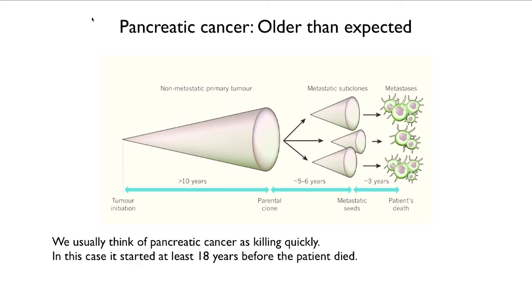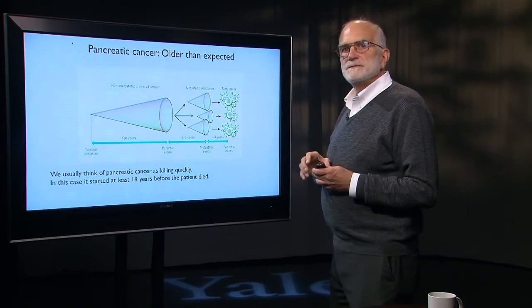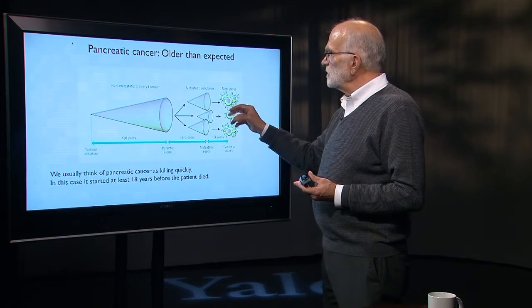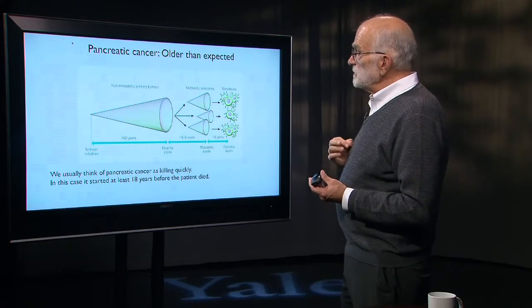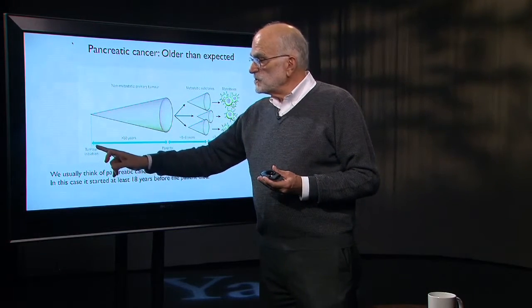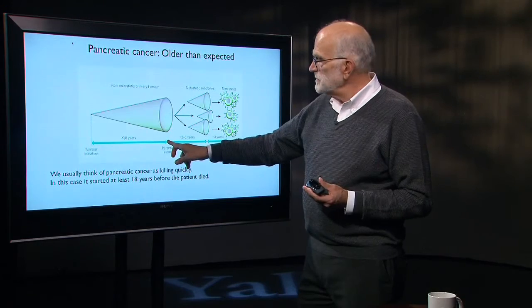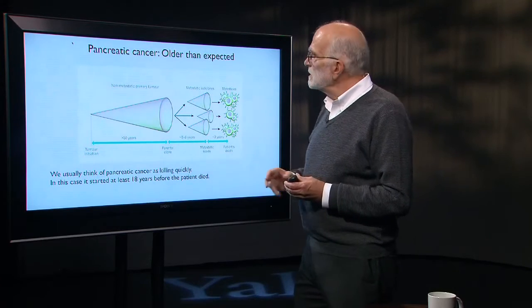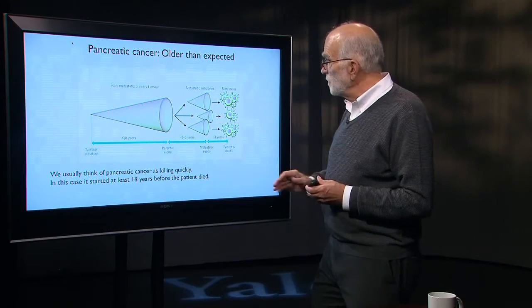Here is an analysis that was done of the metastases in a patient who had died. There were three different metastases. They sequenced the cells in each one and from the DNA sequences they were able to reconstruct how long ago those cells had shared a common progenitor. From that they were able to deduce that the tumor had initiated 18 or 20 years before the patient died. The metastatic subclones that developed out of the pancreas and moved into other kinds of tissues had actually moved into those tissues five or six years before diagnosis.